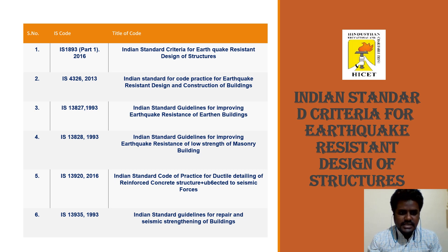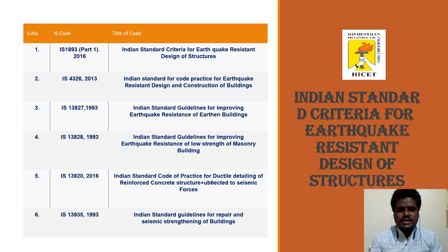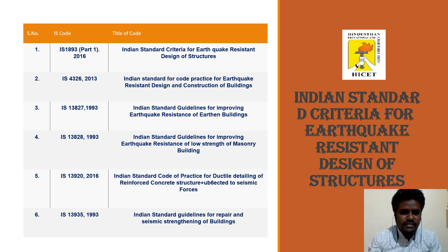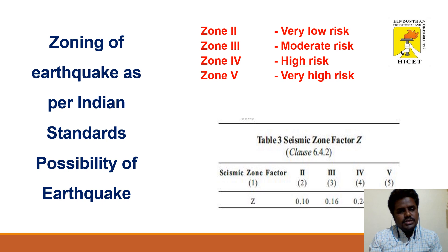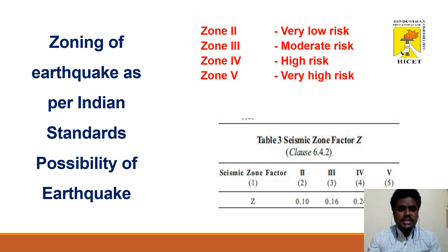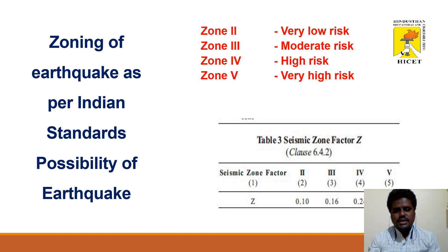IS 13828 (1993) covers guidelines for improving earthquake resistance of low-strength masonry buildings. IS 13920 (2016) is the code of practice for ductile detailing of reinforced concrete structures. Regarding seismic zoning, buildings in India are classified as per zones II, III, IV, and V.